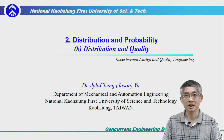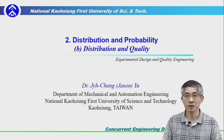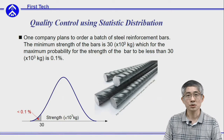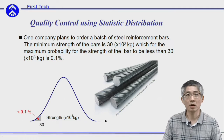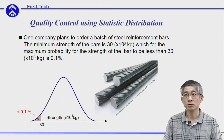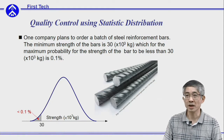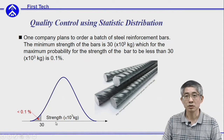In these sessions I will discuss how statistical distributions apply to real-life quality engineering. Assume you are a company planning to order a batch of steel reinforcement bars. The minimum strength requirement for the bars is 30,000 kilograms, and the maximum allowable probability for a bar falling below that minimum requirement must be less than 0.1%.